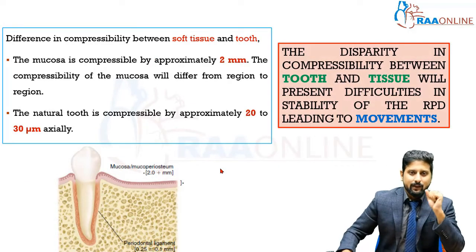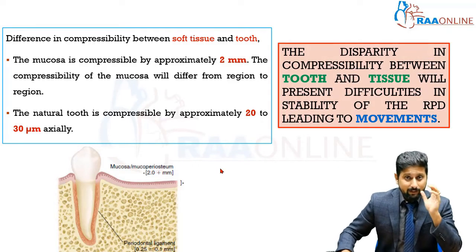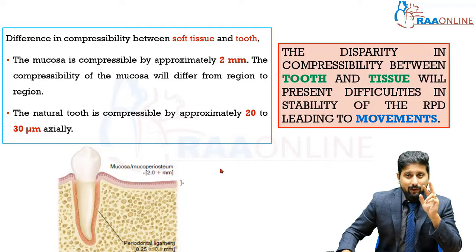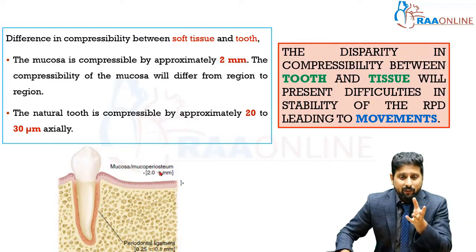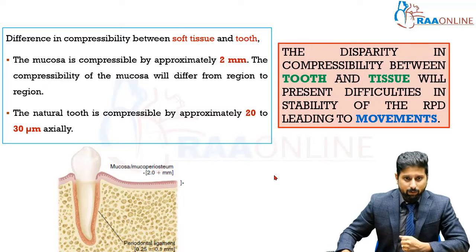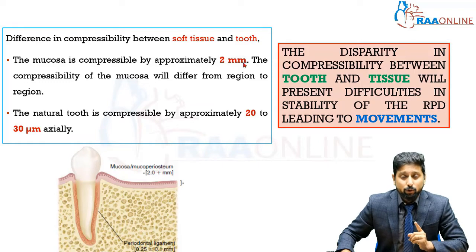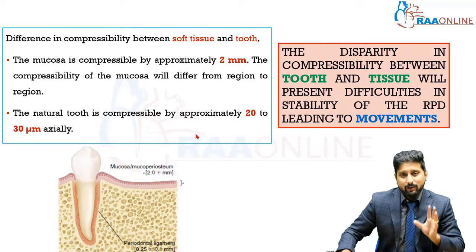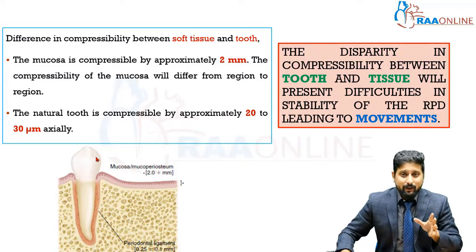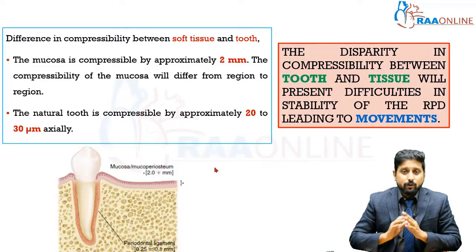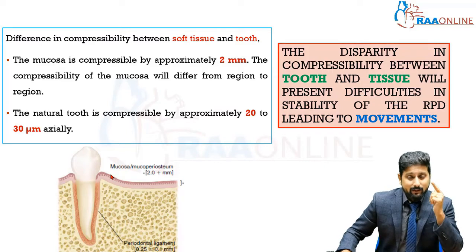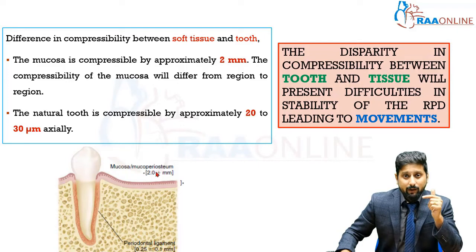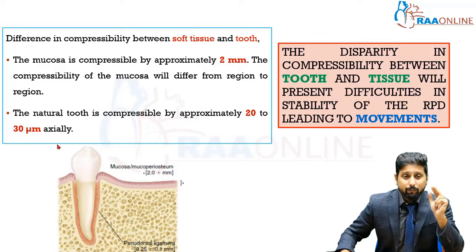There is an inherent difference in compressibility between soft tissue and hard tissue. The RPD takes support from both, but they do not have the same properties. The natural tooth is hard tissue whereas the denture-bearing area has soft tissue overlying bone. Soft tissue can be compressed by up to approximately two millimeters, varying by region, but the tooth can only be compressed in its socket by about 30 microns. This means the part of the RPD resting on soft tissue can move up and down up to two millimeters, while components contacting the tooth can move no more than 30 microns.